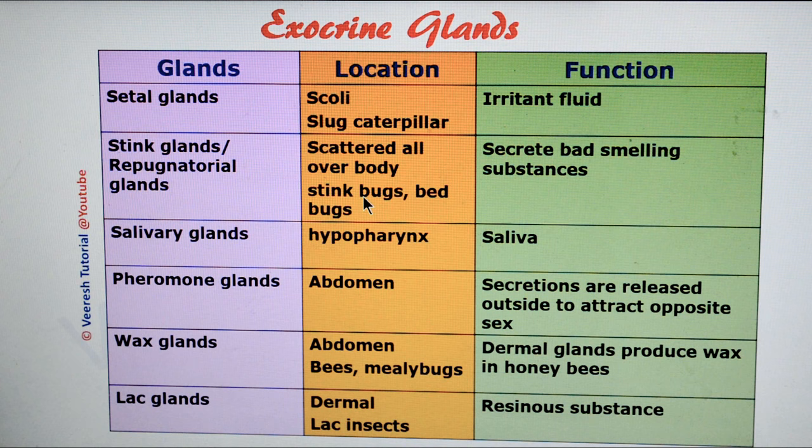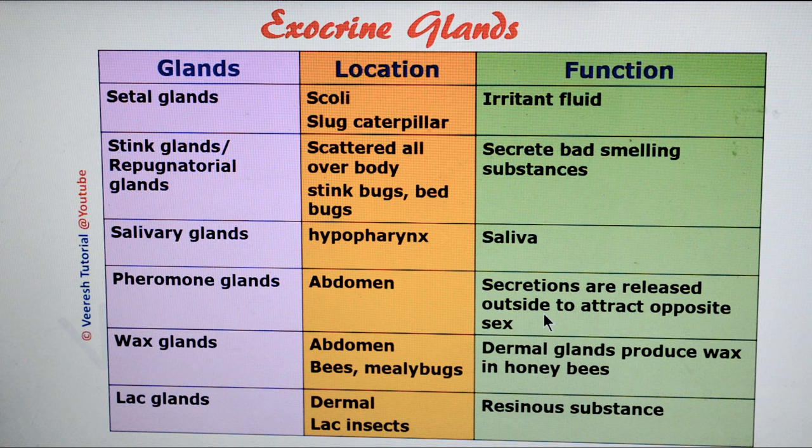Salivary glands are present and open below the hypopharynx; they secrete saliva. Pheromone glands are present in the terminal part of the abdomen; their secretions are released into the environment to attract the opposite sex. Wax glands are dermal glands that produce wax in honeybees and mealybugs; they are mainly located on the abdomen.